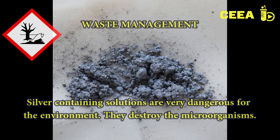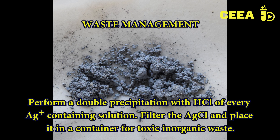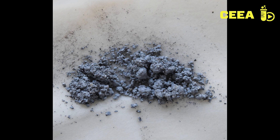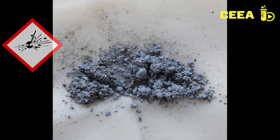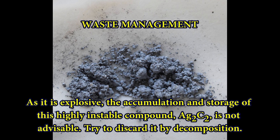As the used compounds contain silver, which is very harmful for the environment, discard all chemicals safely. A precipitation with hydrochloric acid can separate all silver ions from a solution. Filter the silver chloride and place it in a container for toxic inorganic waste. Do not store silver acetylide — try to decompose it either by explosion or by reacting it with hydrochloric acid.